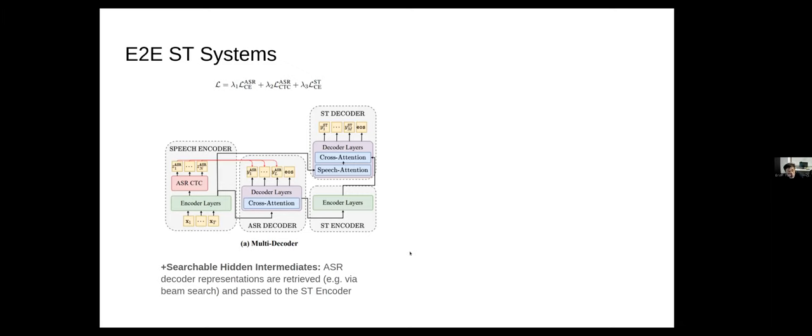Now let's talk about our end-to-end ST systems. Our end-to-end approaches are based on the multi-decoder architecture, which is an architecture that decomposes the speech translation task into its ASR and translation components while keeping its end-to-end differentiability. The way that we do this is we build a model with an ASR subnet and a subsequent translation subnet where both subnets are consisting of an encoder and a decoder.